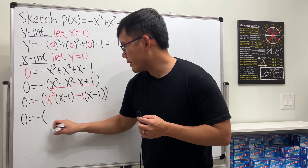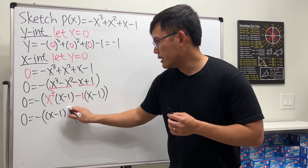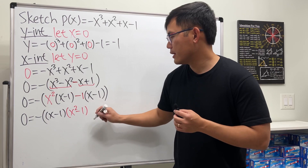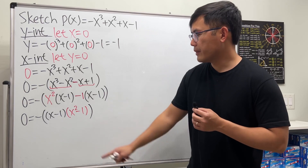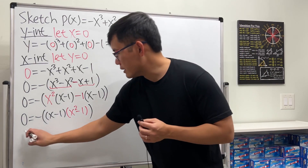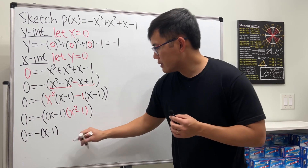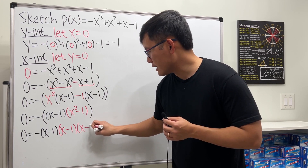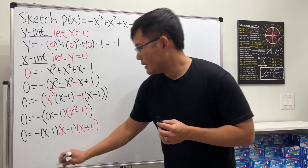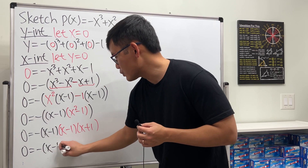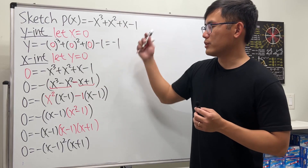So we have zero equals negative times (x - 1) factored out, with (x² - 1) remaining. We don't need that extra parentheses anymore. And (x² - 1) can actually be factored further — that factors into (x - 1)(x + 1). So finally we get zero equals negative(x - 1)²(x + 1). This is the fully factored form of the original polynomial.